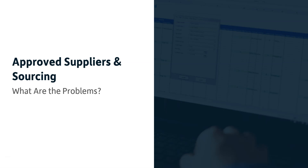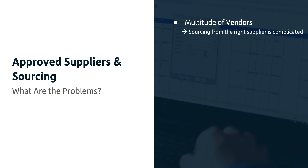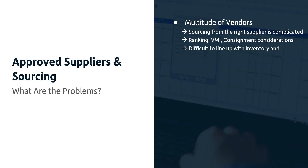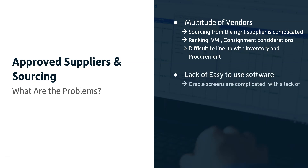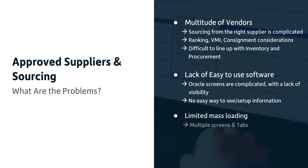With approved suppliers and sourcing, there are many problems: a multitude of vendors, complicated supplier selection, blanket agreements, iSupplier portal, inventory master, supplier ranking, vendor managed inventory, and consignment considerations. Capacity and authorizations add further complexity. It's really difficult to line up inventory and procurement, and Oracle screens are complicated with a lack of visibility and no easy way to see or set up information.